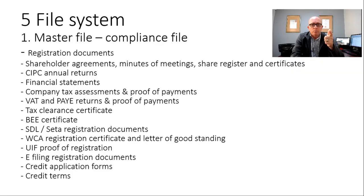The next items in the master file are your shareholders agreements, minutes of meetings, your share register, and any share certificates. All the compliance documents needed for banks and so on go in there. Also your CIPC annual returns — remember there's a return you need to file with CIPC once per year. If you don't file it annually, after a few years they can deregister your company. Keep copies of those filed returns in the CIPC folder, as well as your financial statements, which you need to keep indefinitely.